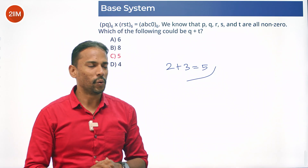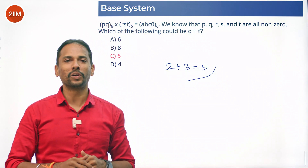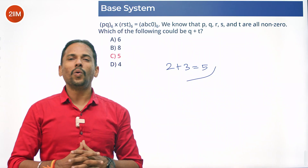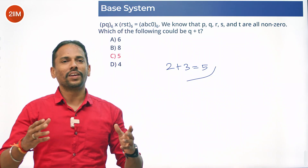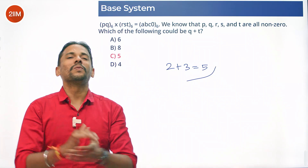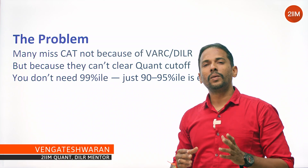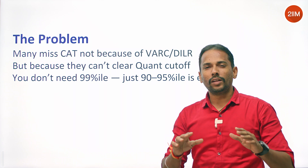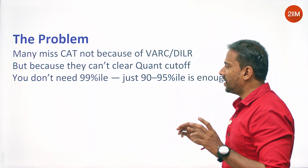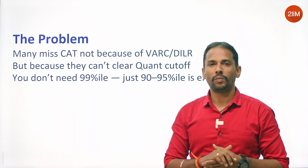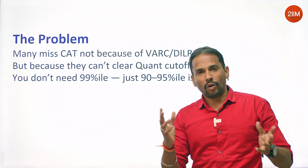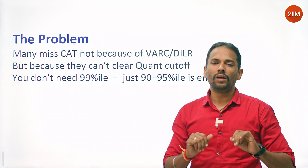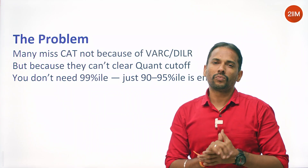My guess is you're looking at all topics in quants — number systems, geometry. I think this video will suit you better. We'll see four steps on how you can acquire that 90-95 percentile in quants. If you've just started your CAT preparation, the biggest worry is how to handle quant. You're okay with LRDI and VRC, but math — you haven't been in touch for a long time.